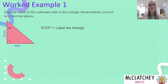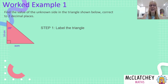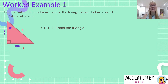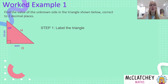Let's start with worked example one. We've been given a triangle and need to find the value of the unknown side, shown with the letter x, correct to two decimal places. Our first step is to label our triangle. Go across from the right angle and find your hypotenuse — it's your longest side. Now look at the angle provided, 28 degrees, which shows us the opposite side — that's our unknown — and we label that as our opposite side.